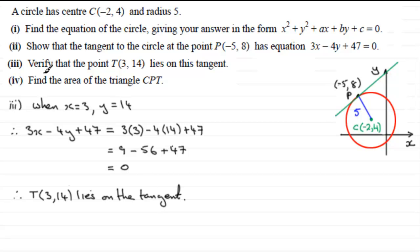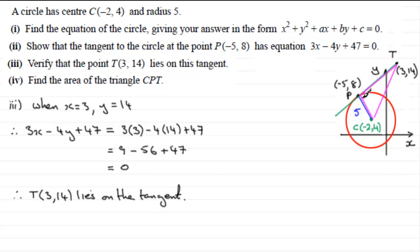For the next part, we're asked to find the area of the triangle CPT. Let's put the point T on our tangent — it's not going to be accurate, but it's over here, three units across, 14 units up. So that's T there with coordinates (3, 14). It's a right-angled triangle, with the right angle here. All I need to do is multiply the base times the height PT and divide by 2 — half base times height. The base is the radius, 5. I've just got to get the distance P to T.